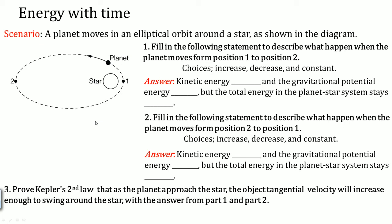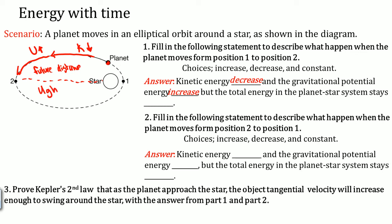Next, a planet moves in an elliptical orbit around a star. Fill in the following statement describing what happens when the planet moves from point 1 to point 2. The object's kinetic energy will decrease, gravitational potential energy will increase because the planet is at a further distance away and has more potential energy at that moment. However, the total energy will be constant.